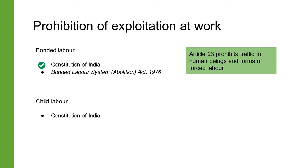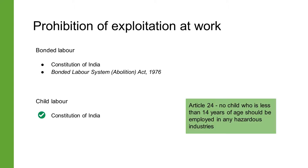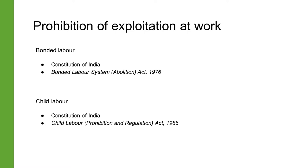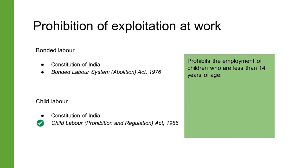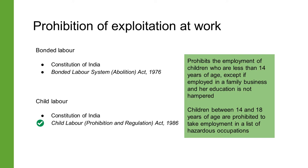Article 23 of the Constitution of India prohibits traffic in human beings and begar and other similar forms of forced labor. Article 24 provides that no child less than 14 years of age should be employed in any hazardous industries. The Child Labor Prohibition and Regulation Act of 1986 completely prohibits the employment of children under 14 years of age, except if employed in a family business and their education is not hampered. Those between 14 and 18 years of age are prohibited from employment in a list of hazardous occupations.